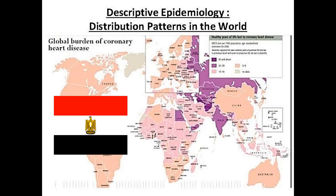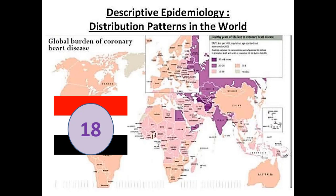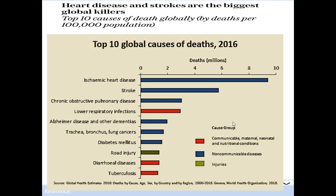Why do we talk about cardiology? Ischemic heart disease in our country ranks number 18 according to the WHO in prevalence of ischemic heart disease. It is a major disease in our beloved country. Globally, ischemic heart disease is the number one killer in the whole world according to the WHO 2016 report, followed by stroke. If you prevent ischemic heart disease, you can decrease mortality.